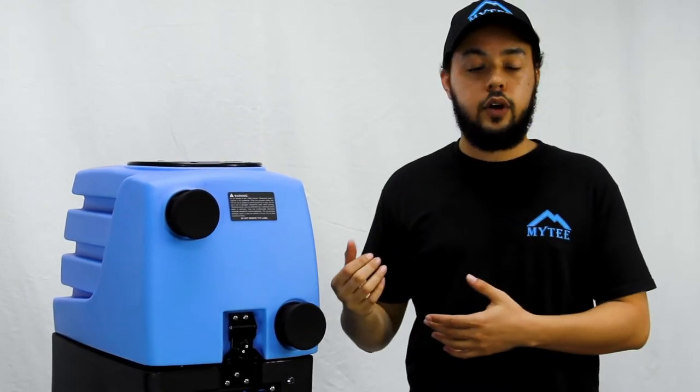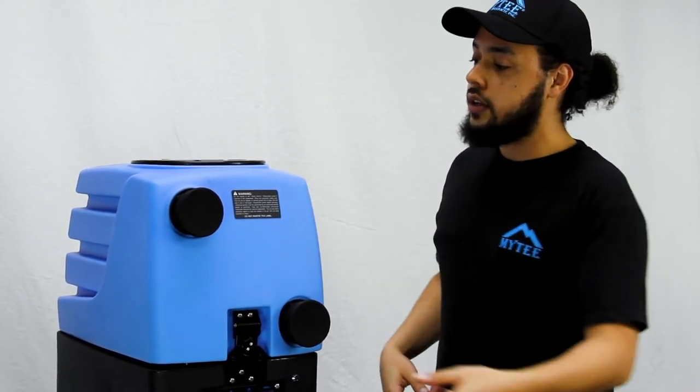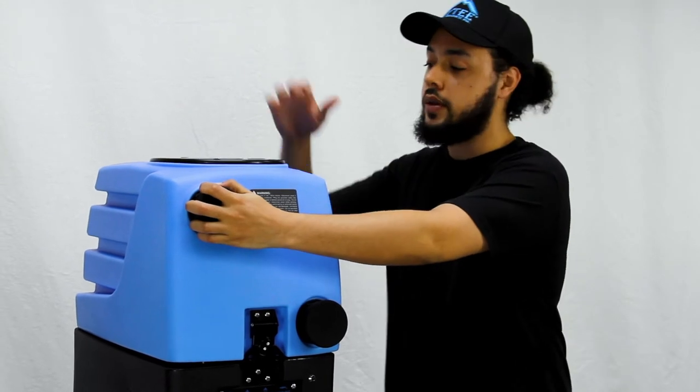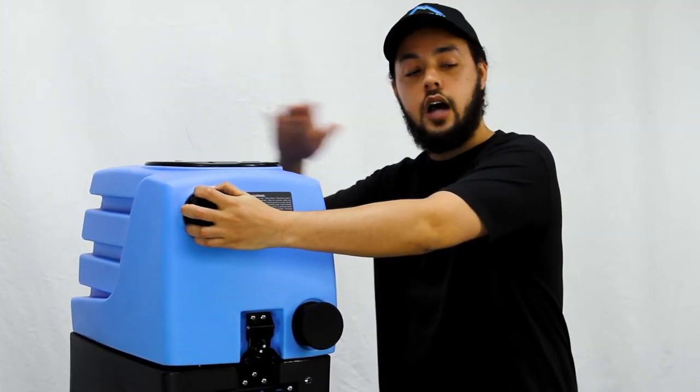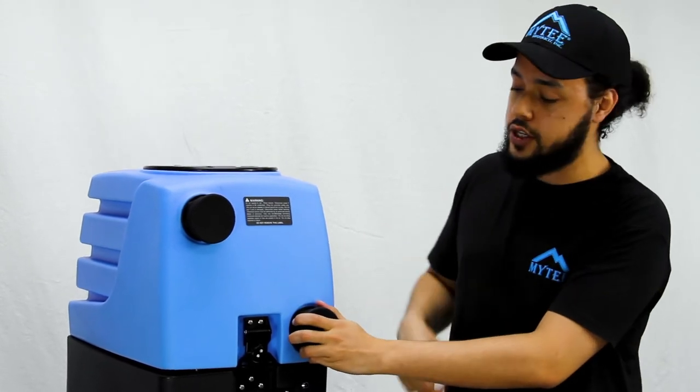If I'm using it as a vacuum booster, I'm going to connect the vacuum hose from my main extractor or truck mount to the top port if I'm going to be using the air hog's auto pump out feature, or I connect it to the bottom port if I'm not using the auto pump out feature.